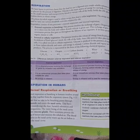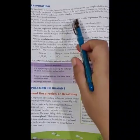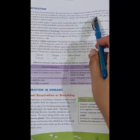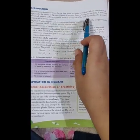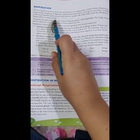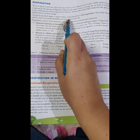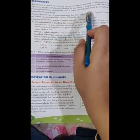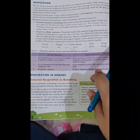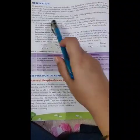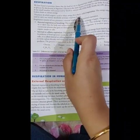Whatever food we eat is broken down into simpler substances and then absorbed by our body to perform various functions. Glucose is the main source of energy in our body, and inside the cell, glucose is broken down to release energy. So the process by which oxygen is used to release energy from food is called respiration.